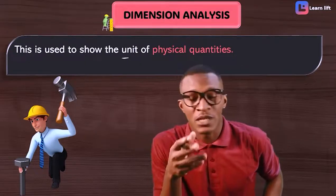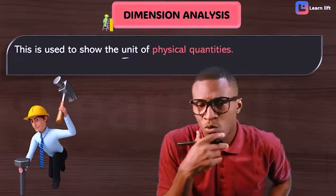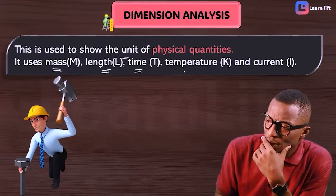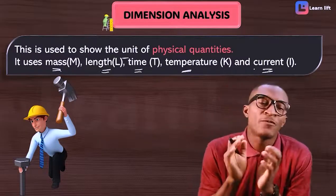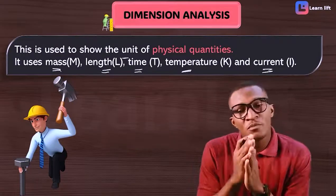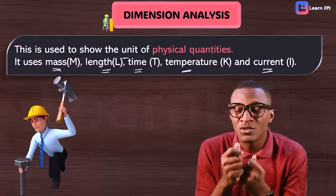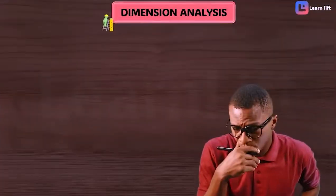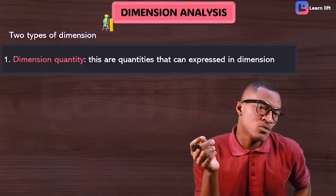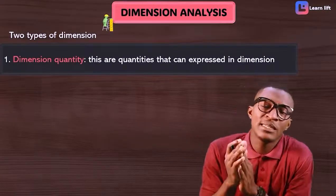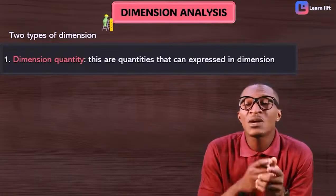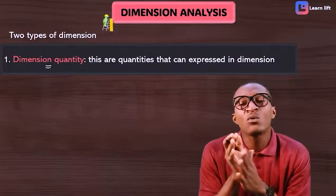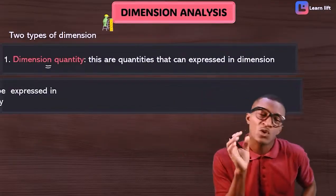Dimensional analysis uses fundamental physical quantities which are mass, length, time, temperature, and current — all of them are fundamental quantities. Dimension shows the unit of physical quantities. There are two types: quantities that have dimension are called dimensional quantities — any quantity we can express in terms of dimension. Any quantity we cannot express in dimension is called a dimensionless quantity.